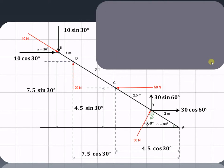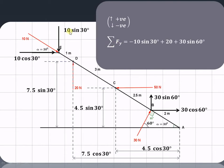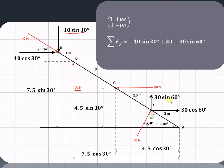Similarly, we can find out the summation of forces in the y direction using the convention that upward forces are considered positive whereas downward forces are considered negative. So summation of Fy: the 10 sin 30 is acting in the downward direction so it is negative. The 20 Newton force is acting in the upward direction so it is positive, whereas 30 sin 60 is also acting in the upward direction so that is also positive. Therefore, summation of Fy gives us 40.98 Newton.